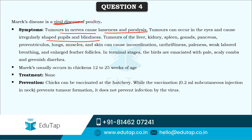Along with tumors, incoordination, paleness, labored breathing, and enlarged feather follicles can also be seen. In terminal stages, birds are emaciated with pale scaly combs and greenish diarrhea. Marek's disease generally occurs in chickens of 12 to 25 weeks of age. There is no proper treatment for Marek's disease, and prevention can only be through vaccination — but this vaccination only prevents tumor formation and does not prevent the infection itself.